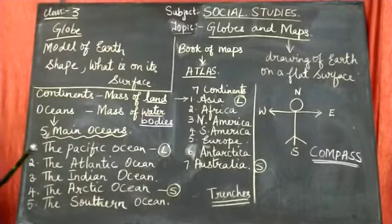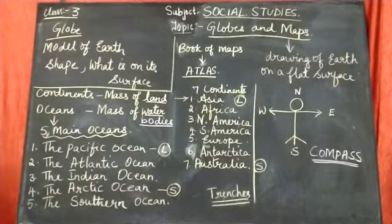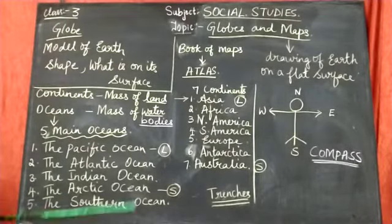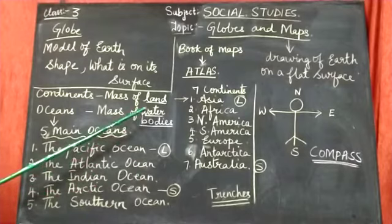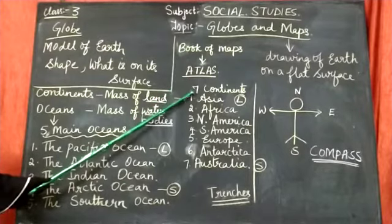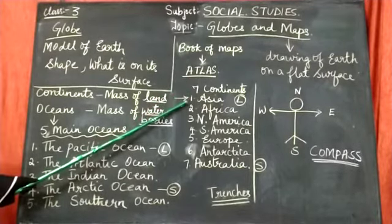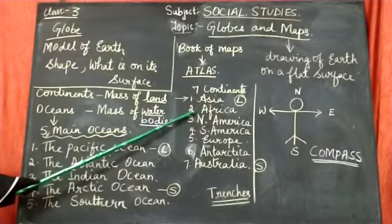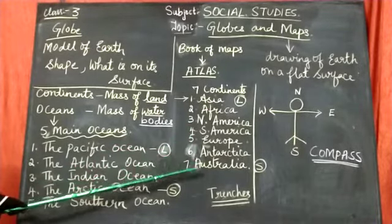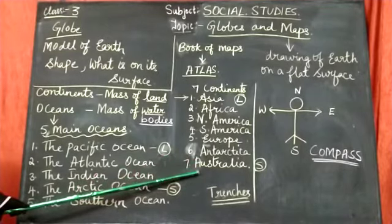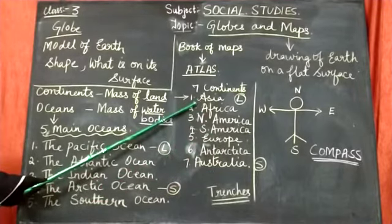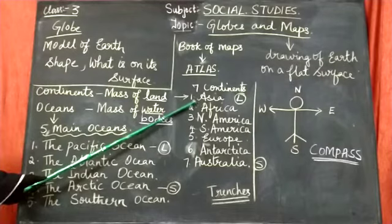There you are having the world map. Now that world map they have given in different colors so that you can know the different continents. So main thing we are having is seven main continents. We are having seven continents. The first is Asia, it is the largest continent, and Africa, then North America, South America, Europe, Antarctica and Australia. Now Australia is the smallest continent and Asia is the largest continent and India lies in the continent Asia.